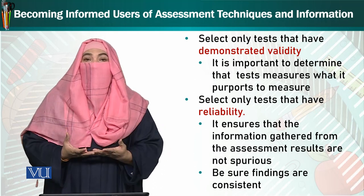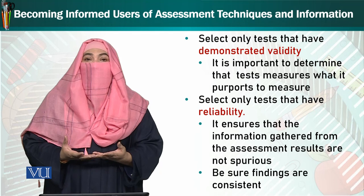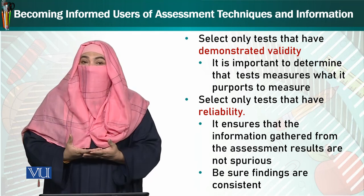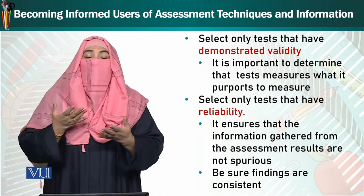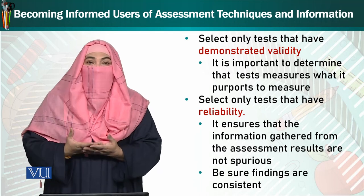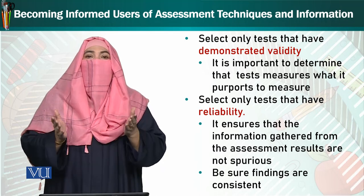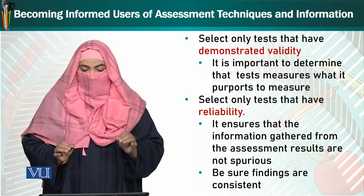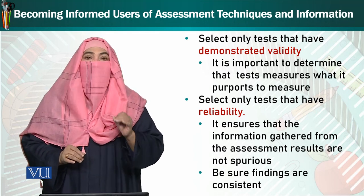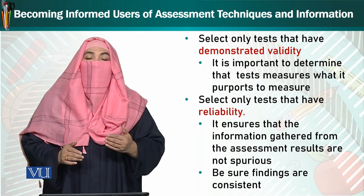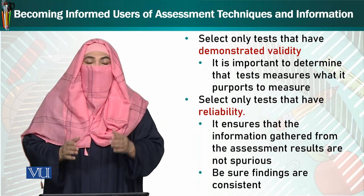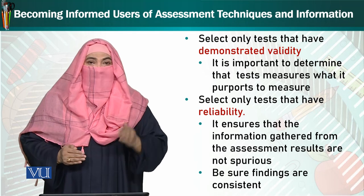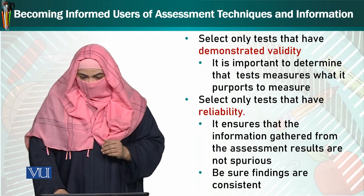कई दफ़ा test ऐसे होते हैं, जैसे फर्ज़ करें हम किसी एक subject को measure कर रहे हैं, लेकिन test किसी तरह से दे दिया है कि बच्चे किसी और trait को वहाँ पे ज़ाहिर कर रहे हैं। तो जो असल trait हमने measure करना था, उसको focus नहीं किया। अगर मैंने problem solving के लिए बच्चों को test दिया है और मेरी instructions مشکل ہیں، تو reliability نہیں ہوگی۔ Reliability کا مطلب ہے کہ ہماری findings consistent ہونی چاہئیں — ہر دفعہ ایک جیسی۔